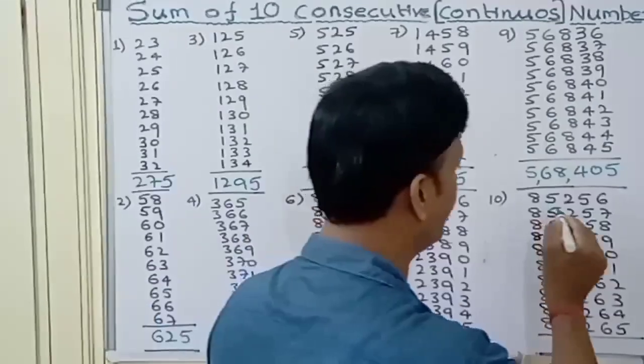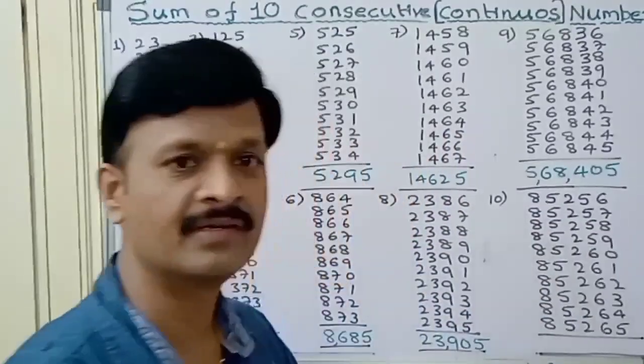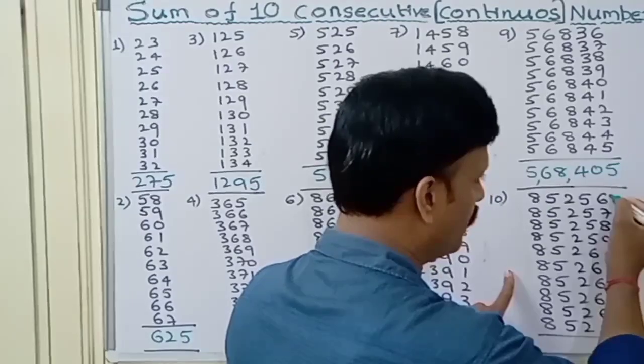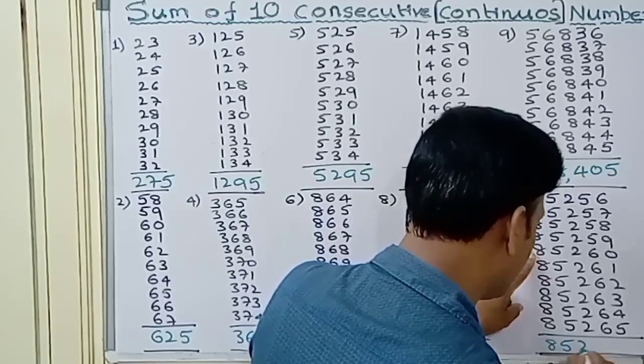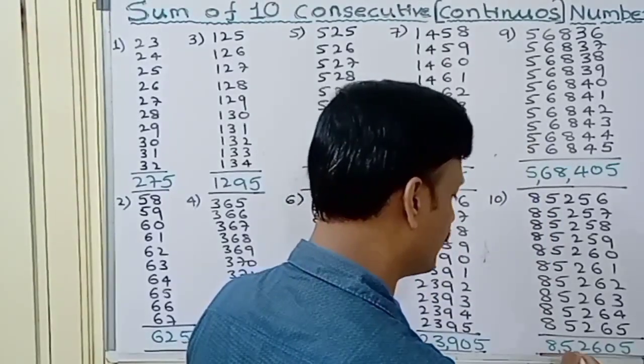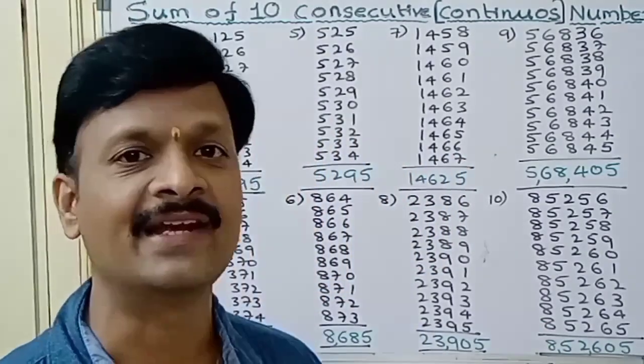Next, the last question. From 85256 to 85265. Count the numbers from the top, 1, 2, 3, 4, 5. You can write 852605. This is the sum of all these consecutive integers, 852605.